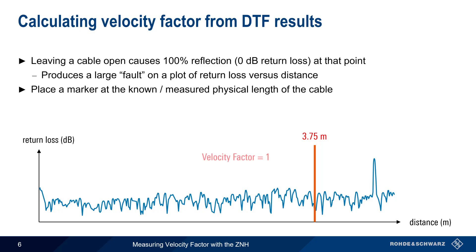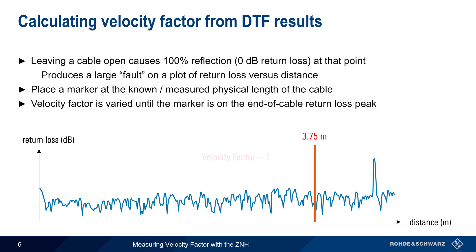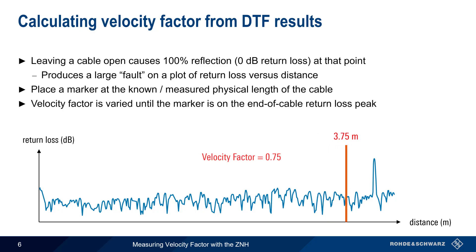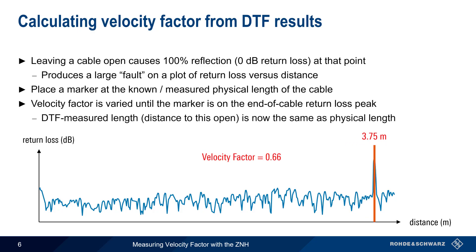If we start with a velocity factor of 1, this marker will always be to the left of our end-of-cable fault. We then adjust the velocity factor until the marker is on the end-of-cable return loss peak. At this point, the length measured by the distance-to-fault measurement and the physical length of the cable will be the same, indicating that we are using the correct velocity factor for the cable under test.